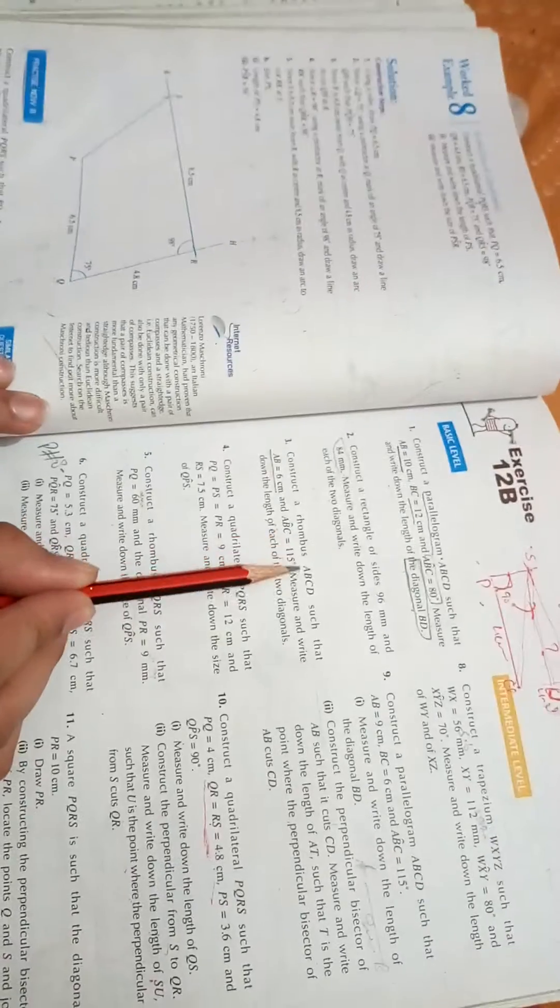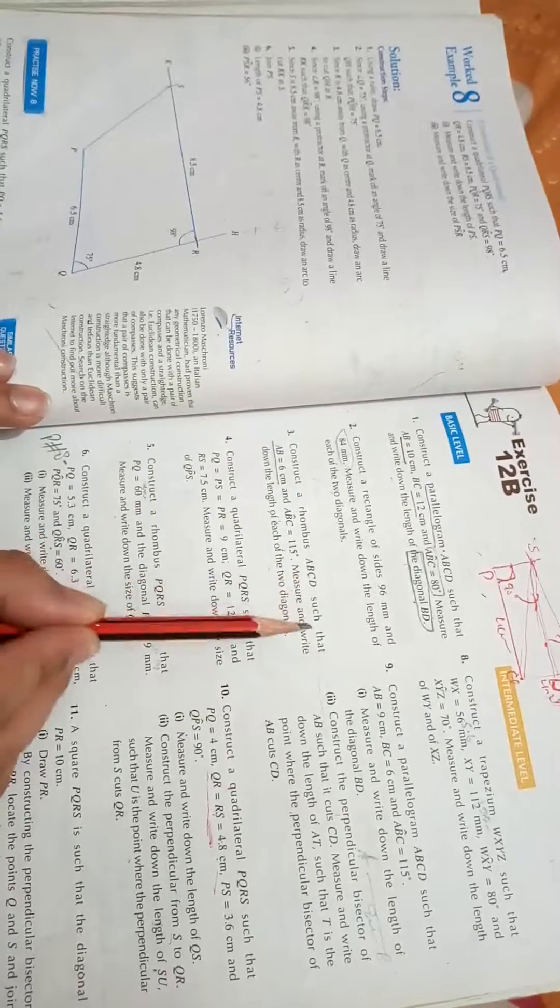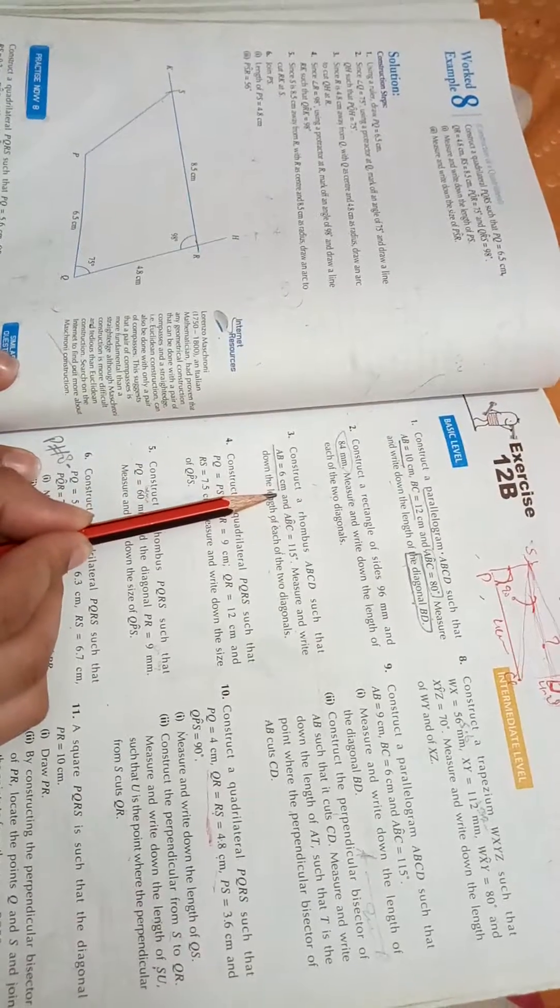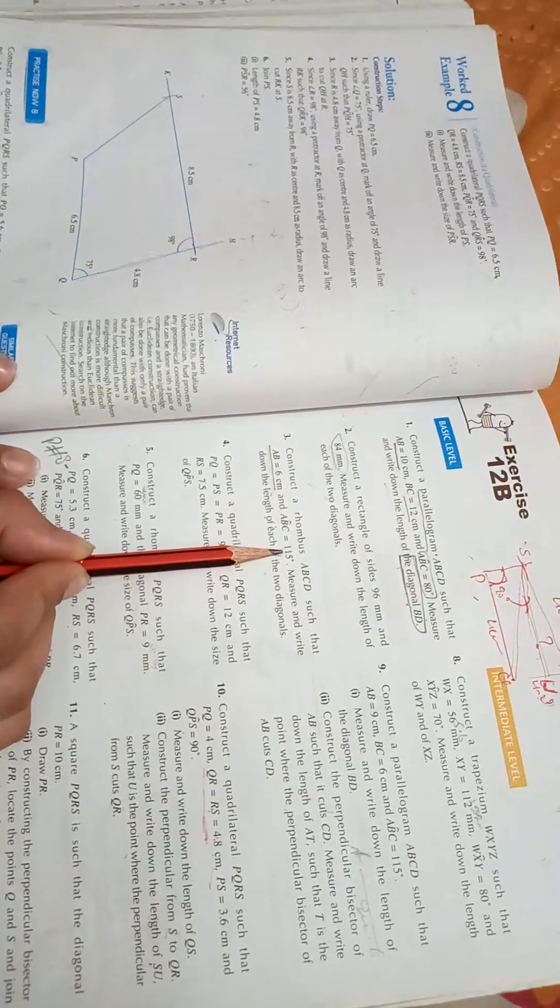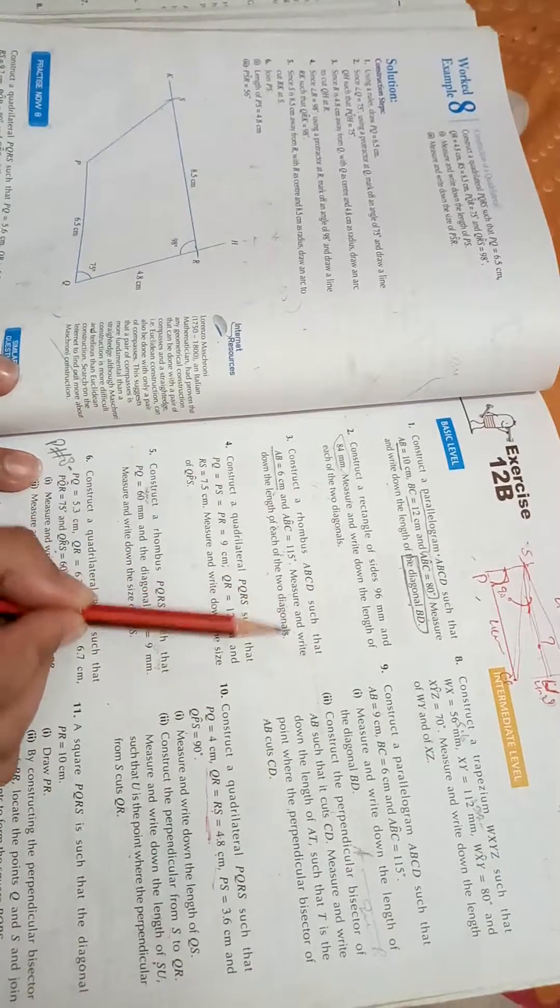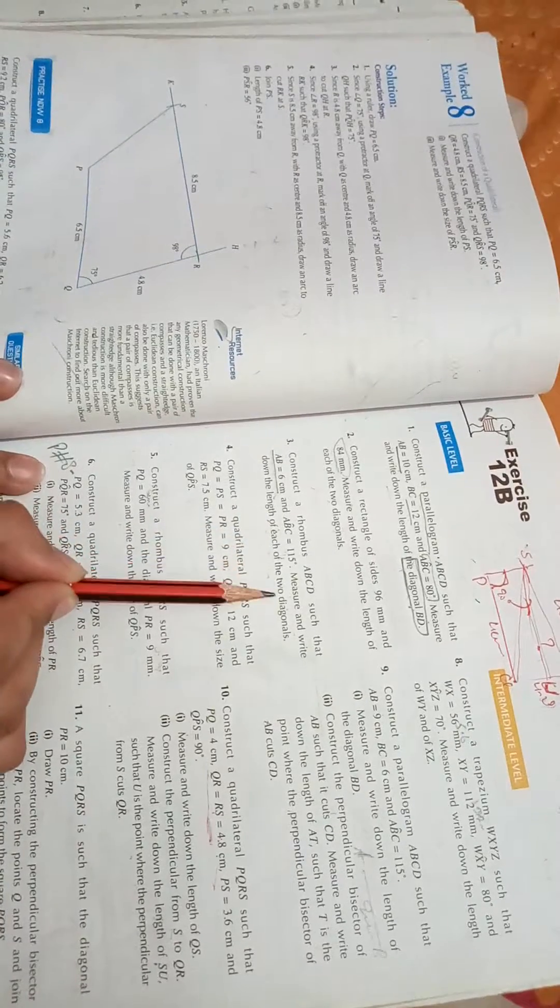Construct a rhombus ABCD such that AB is equal to 6 centimeters and we have an angle at B that is 115 degrees. Then write down the lengths of each of the two diagonals.